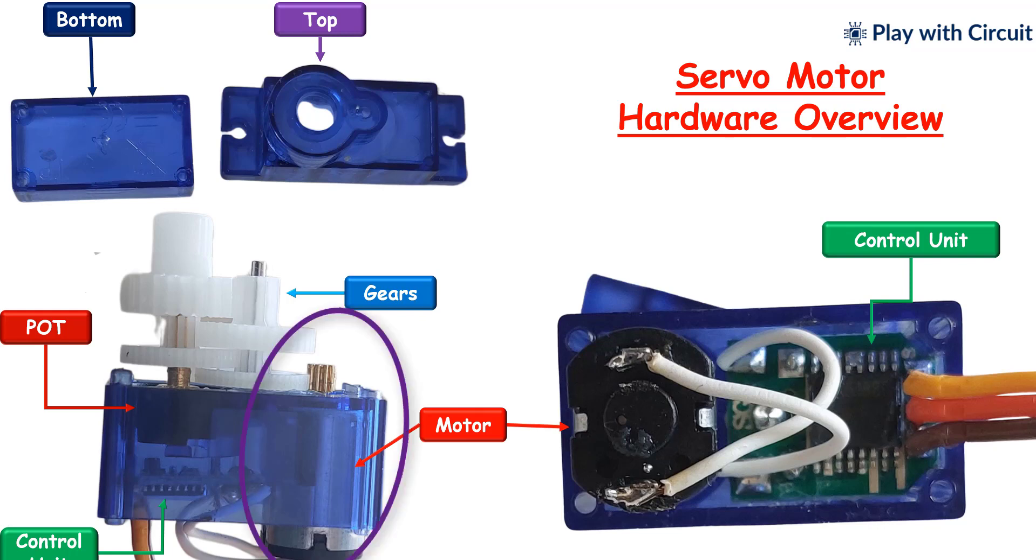It consists of a small DC motor, a gear train, a sensor for position feedback, control circuitry, and an output shaft.